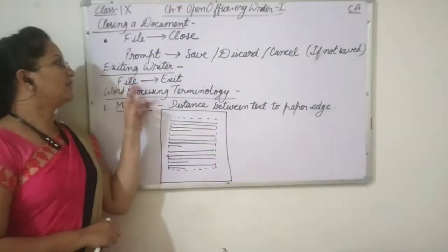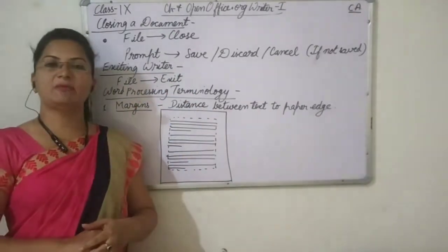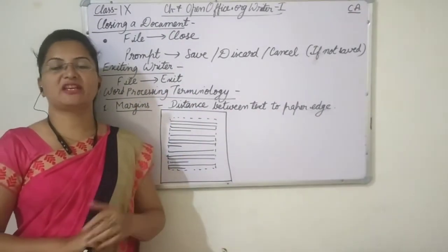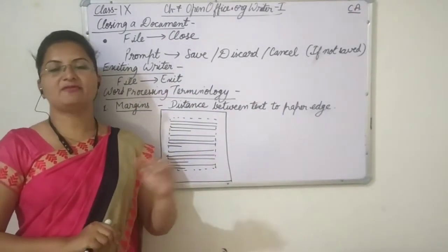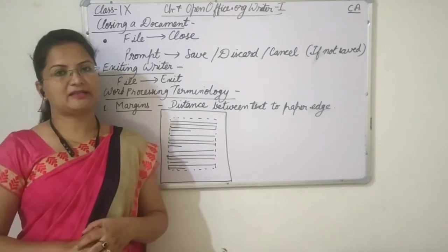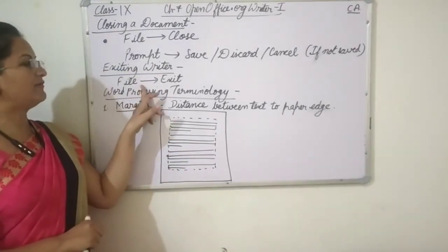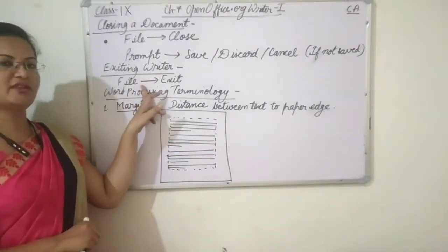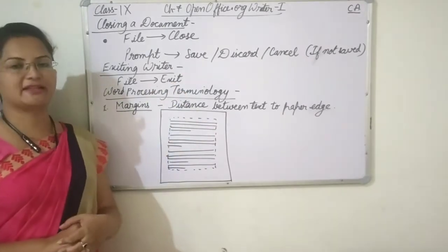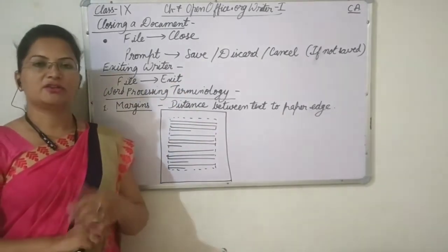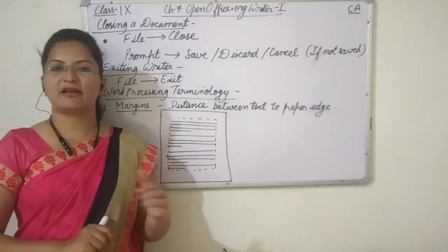Now, exiting Writer. Exiting Writer means closing the window — exiting from the Writer window. We have to click on File in the menu and then choose the Exit option. Exit will close the Writer window.